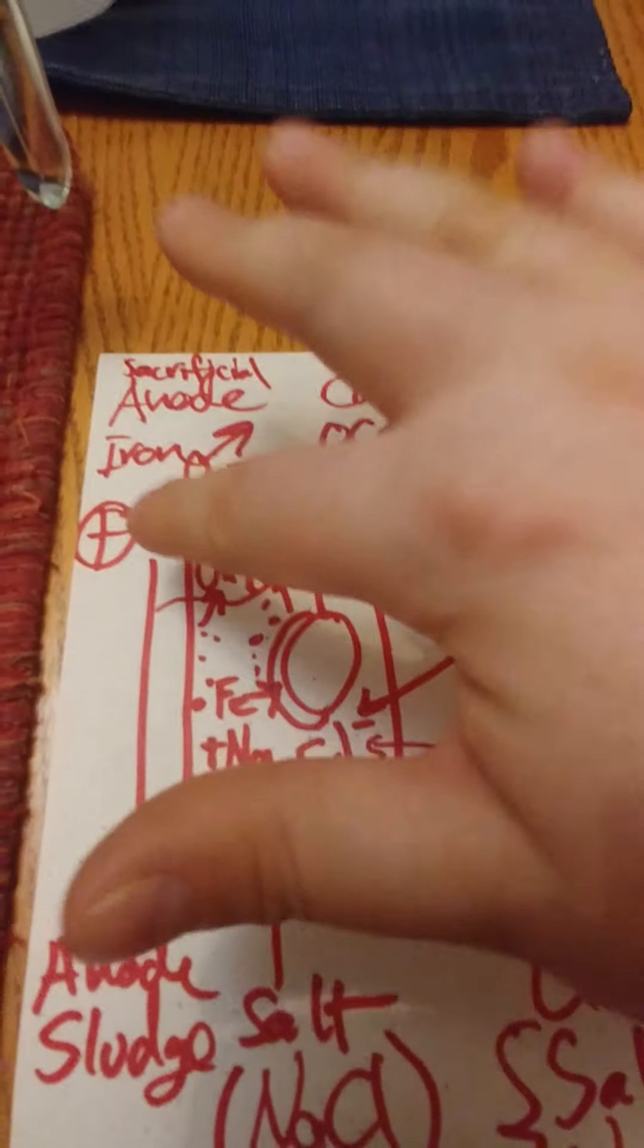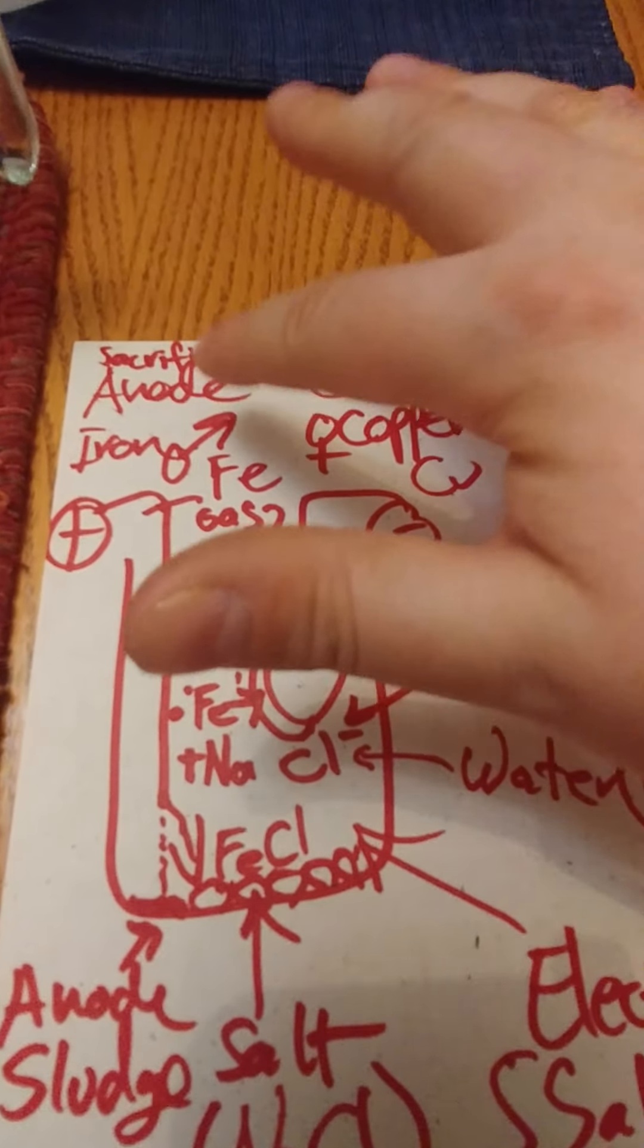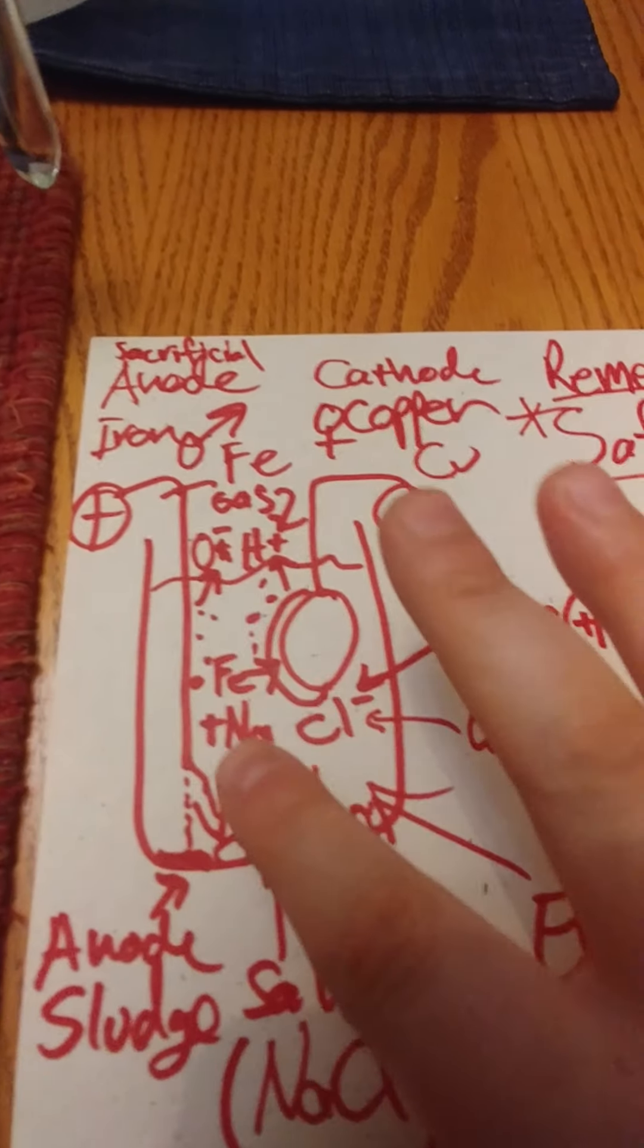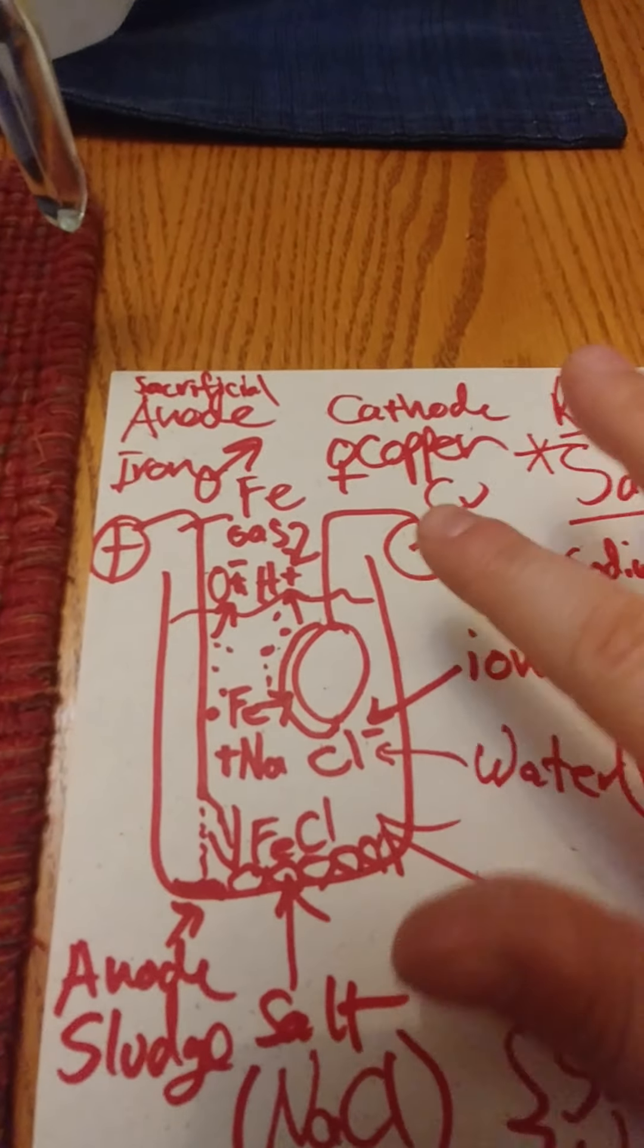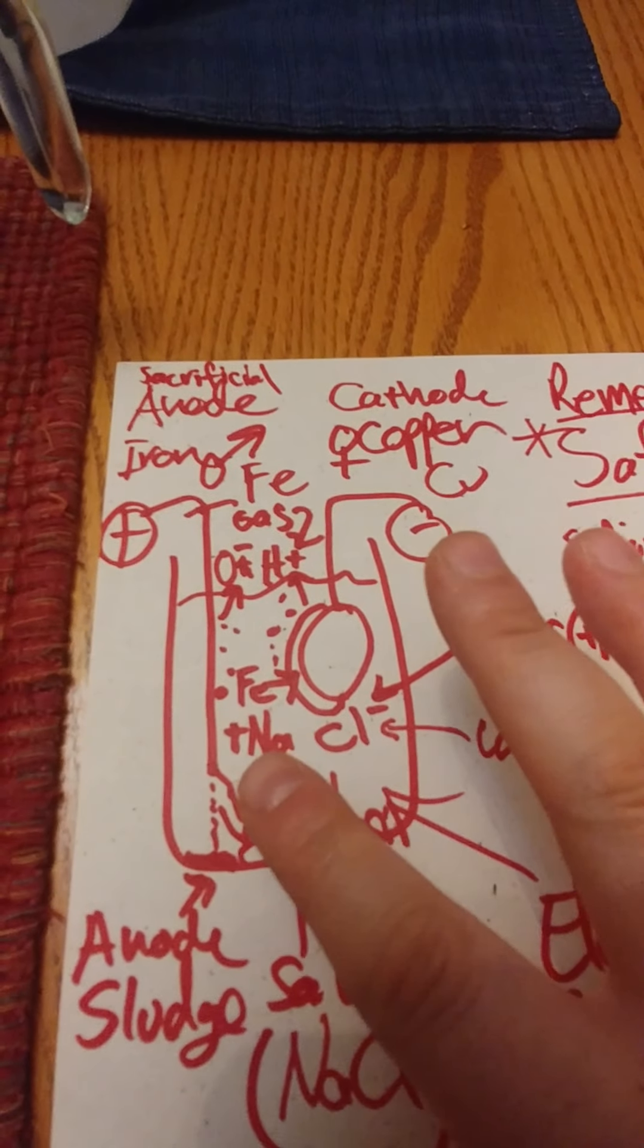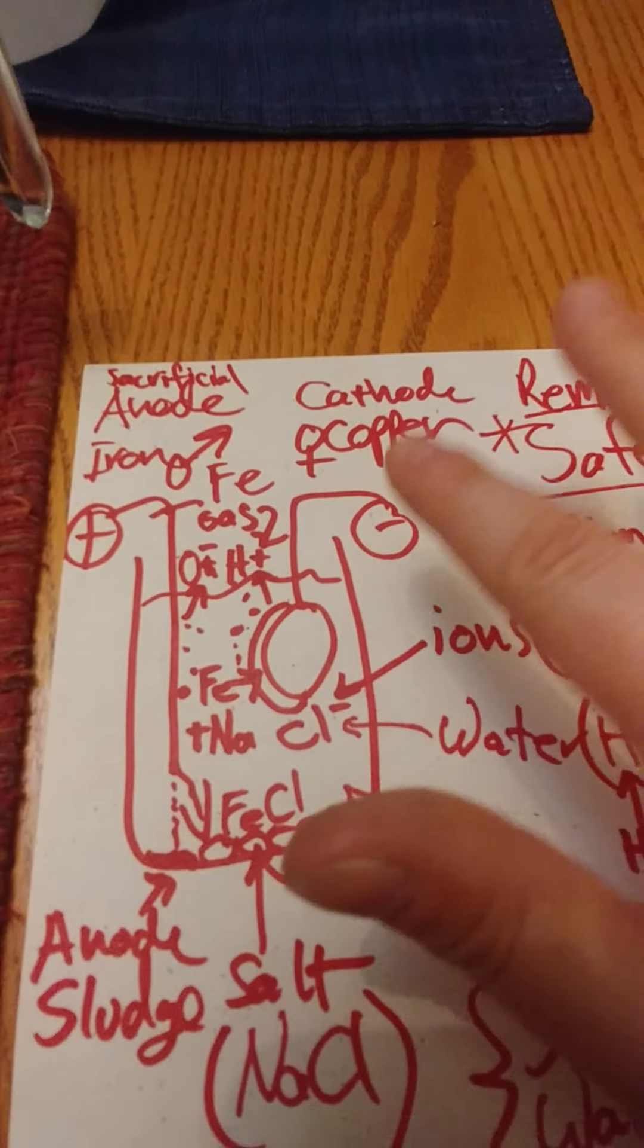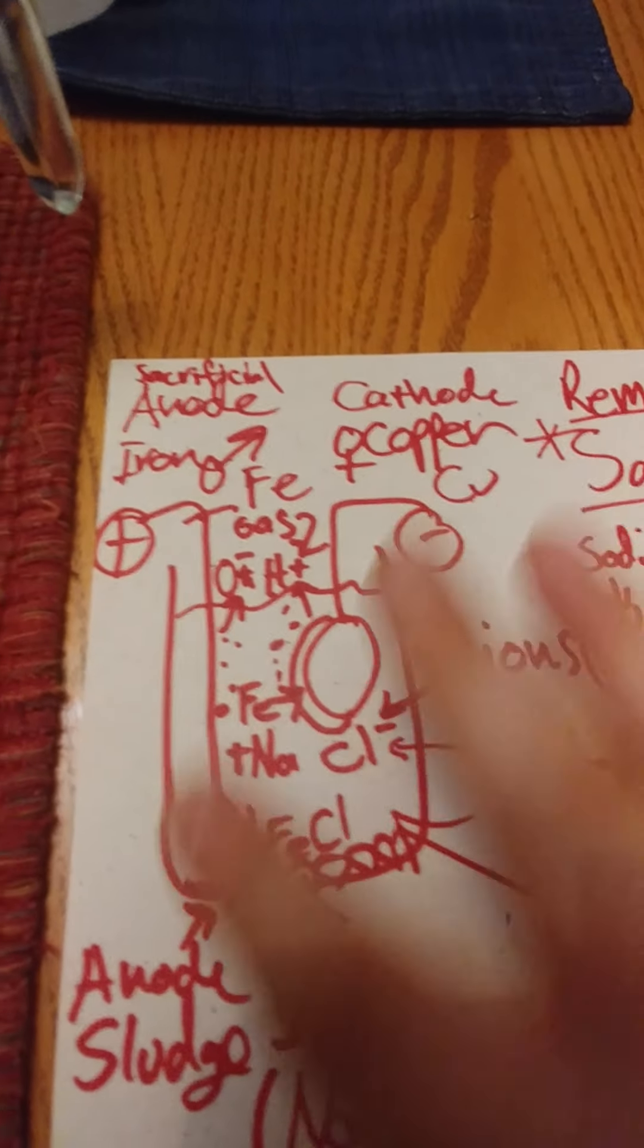And the positive pole is known as the anode or the sacrificial anode. And the negative pole is known as the cathode. And the positive pole dissolves into the liquid by whatever chemistry is occurring. And ultimately, through ionic reactions, it goes over and coats the negative pole or the cathode. So that's the process that occurs.